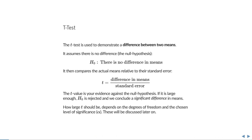All t-tests are used to demonstrate a difference between two means. They work by assuming that there is no difference, and this is called the null hypothesis, or H0. Then the t-test compares the actual means relative to their standard error, which is a measure of uncertainty. This t-value is then your evidence against the null hypothesis, and if the t-value is very large, then you have enough evidence to reject the null hypothesis and conclude that there is a real difference — a significant difference. How large this t-value should be depends on the degrees of freedom and the chosen level of significance alpha, which will be discussed later on in the video.